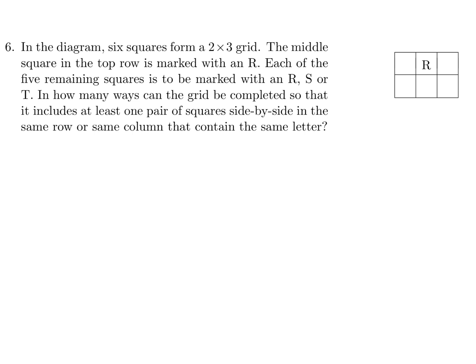In the diagram, six squares form a 2 by 3 grid. The middle square in the top row is marked with an R. Each of the five remaining squares is to be marked with R, S, or T. In how many ways can the grid be completed so that it includes at least one pair of squares side by side in the same row or column containing the same letter? Each of the five remaining boxes has three choices, so there are 3 to the power of 5, which is 243, total combinations.